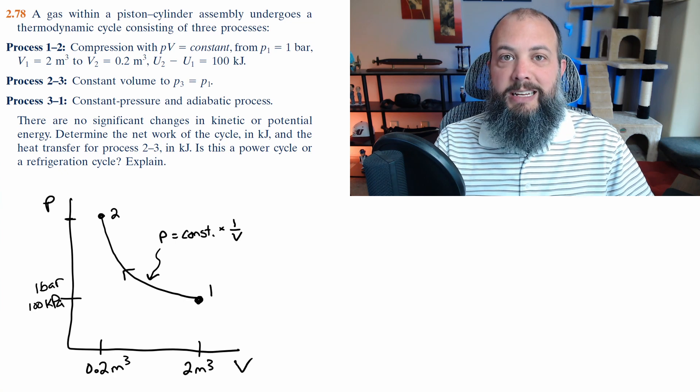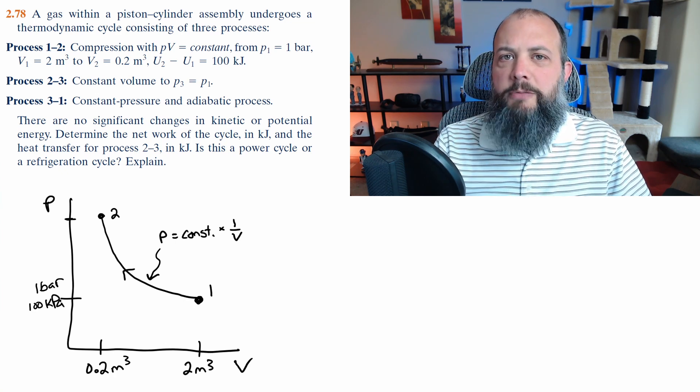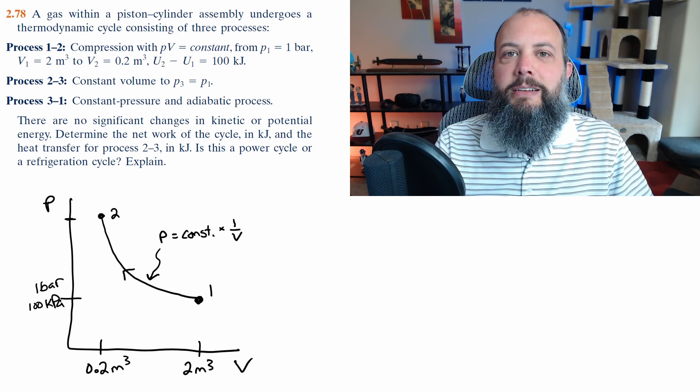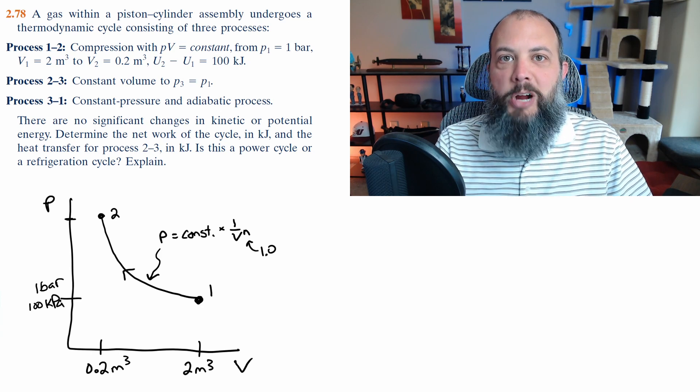Rearranged, pressure equals that constant divided by the volume so this is a hyperbola. The shape of this graph would look the same even if it were PV to the N is a constant in which case you would just add an N to that V but for this problem it's just one.